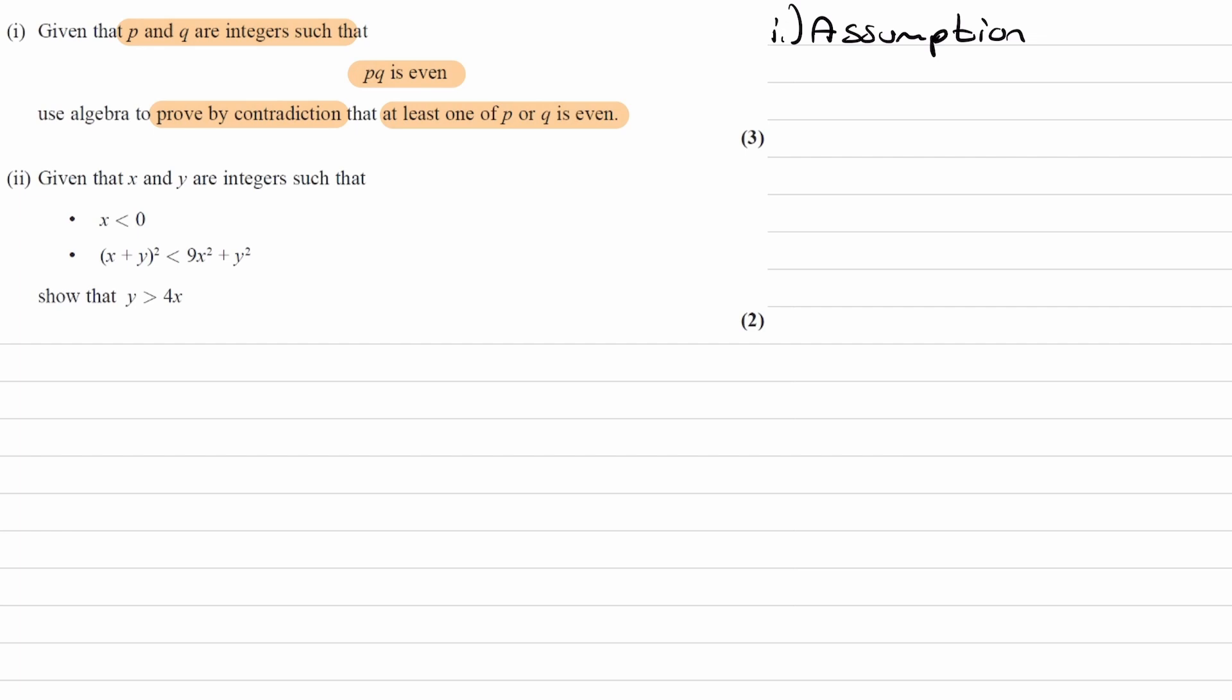So what we're trying to prove is that at least one of P or Q is even. So either P is even, or Q is even, or P and Q are even. The negation of that, the opposite of that, will be that neither P or Q are even, so they're both odd. And just stating at the end that both P and Q are integers.